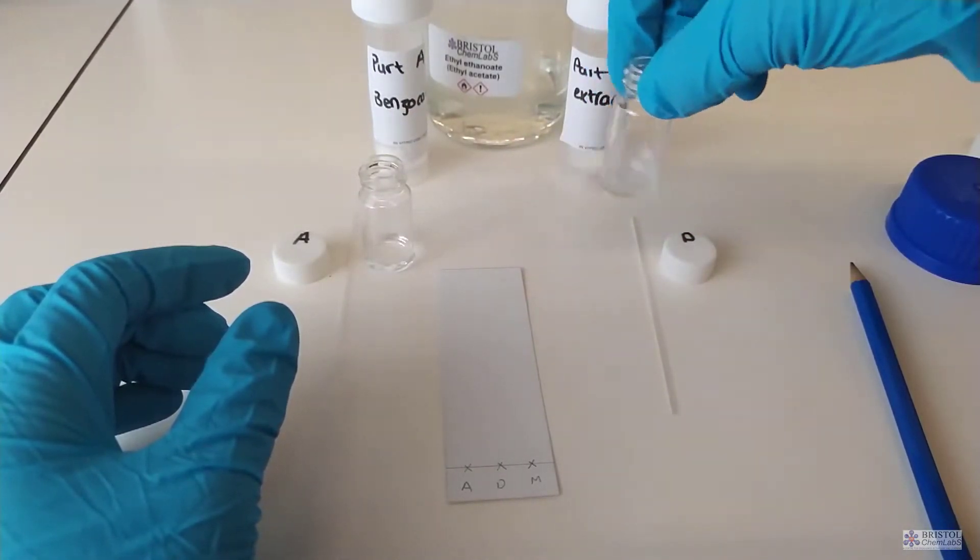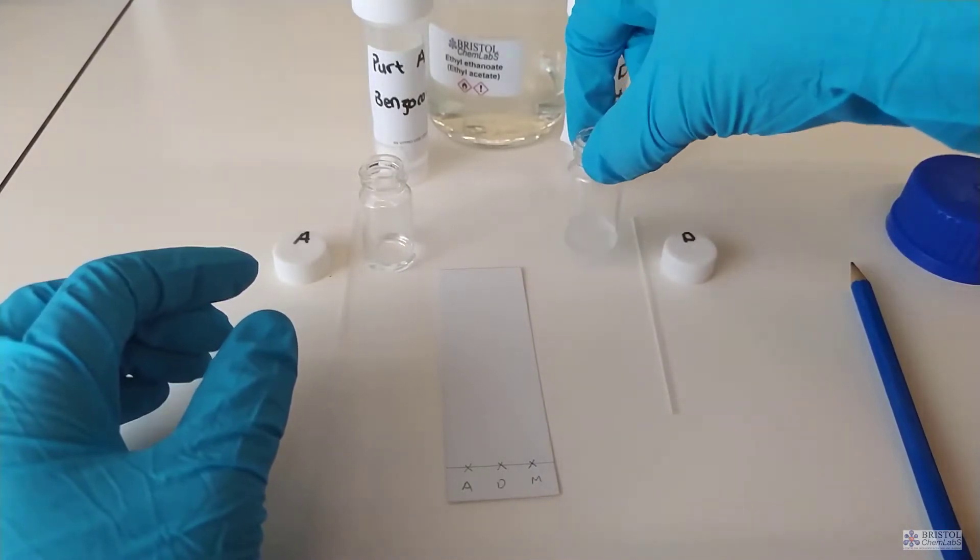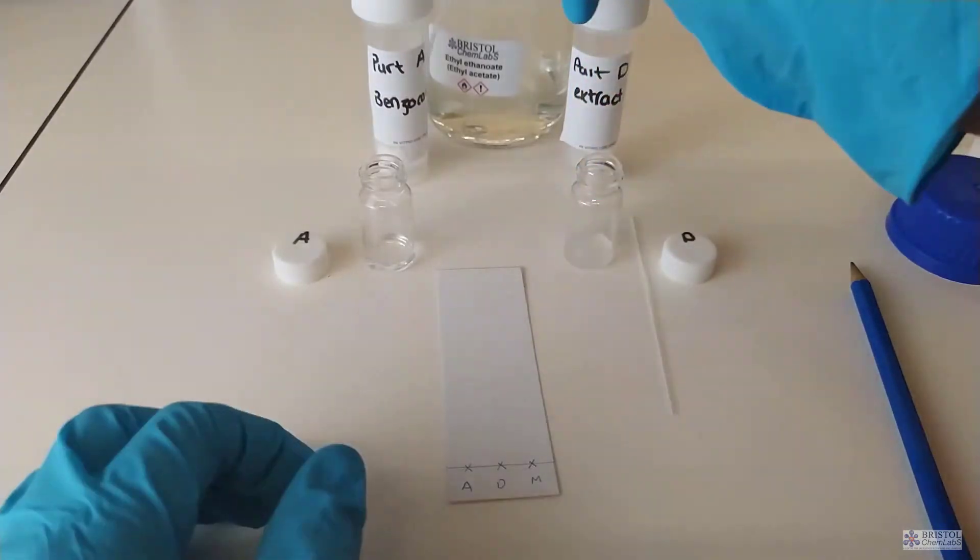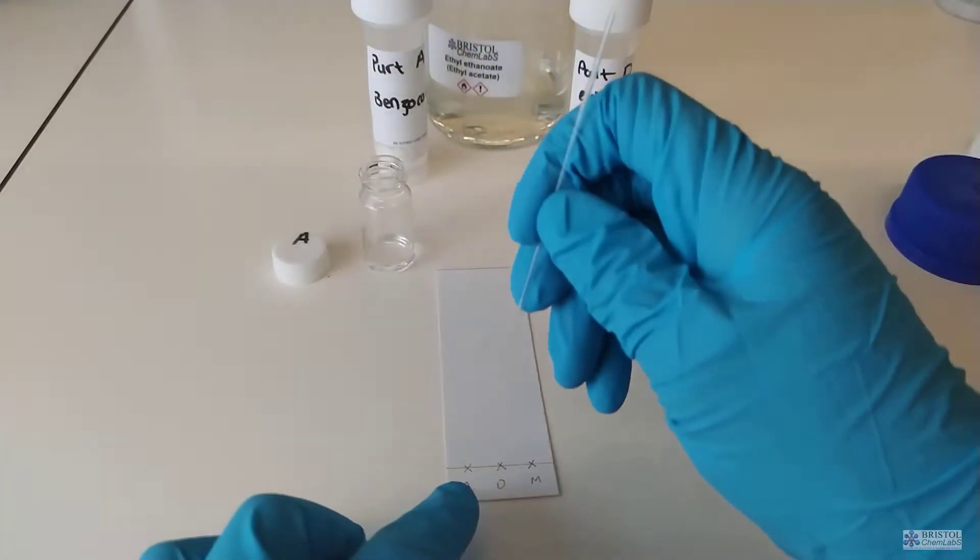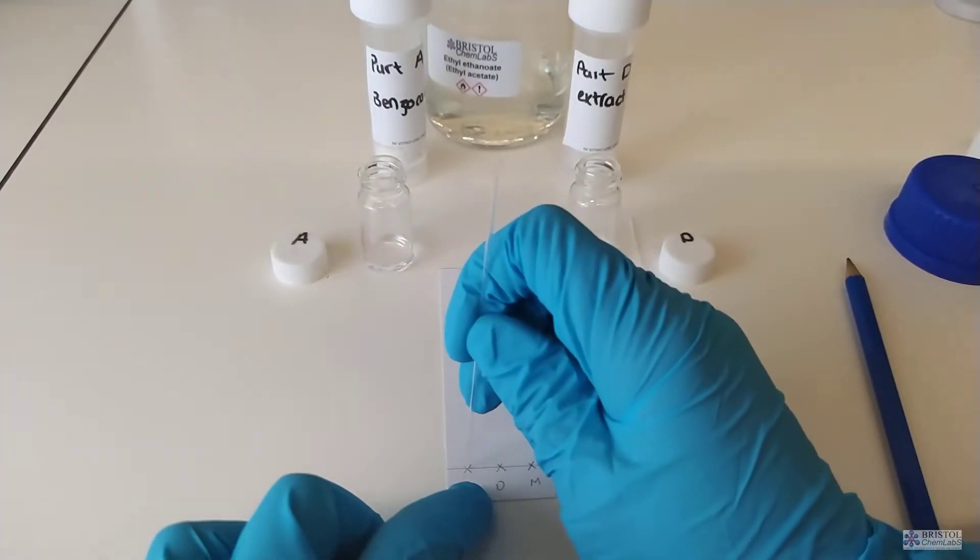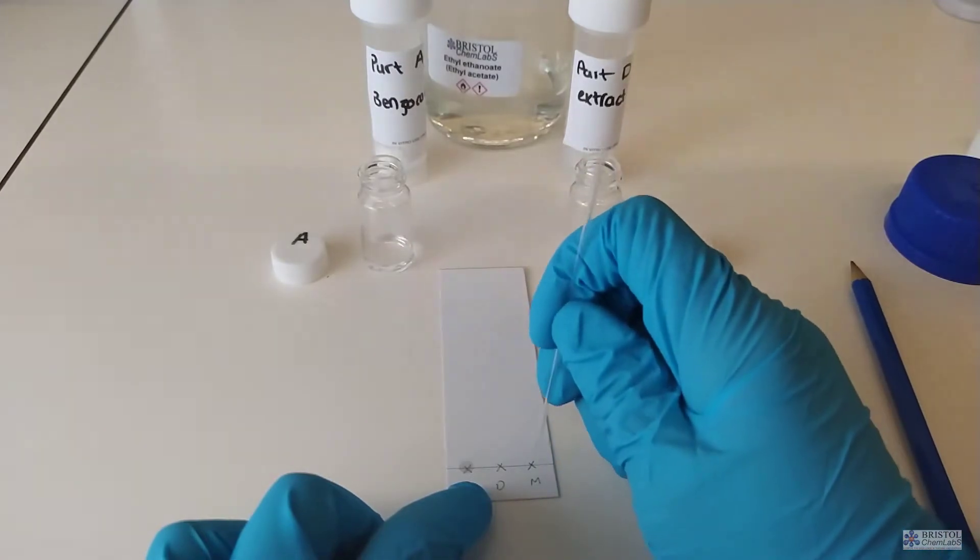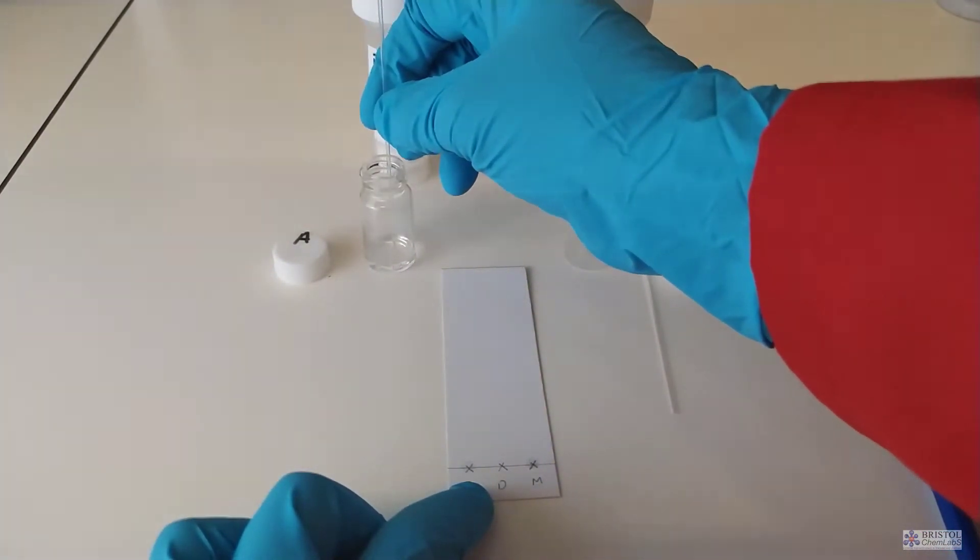We use a capillary tube to apply small amounts of the solvent solute mixture to the markings on the plate. We put several layers one on top of each other and try and make the spot as small as possible. We don't want large blobs because it leads to inaccuracy if we were doing measuring of RF values.